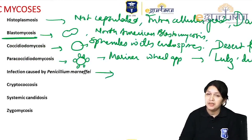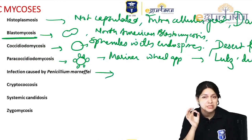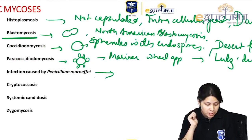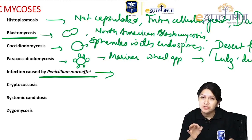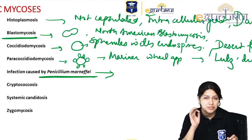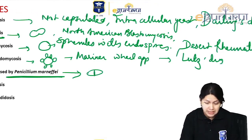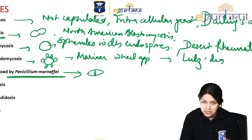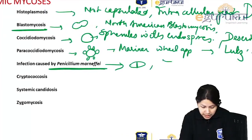Penicillium marneffei is the only species of Penicillium which is dimorphic. The typical yeast cell shows an elongated form with a transverse septum, and the hyphae characteristically show brush-like structures.